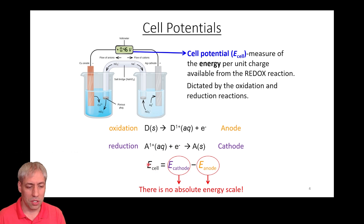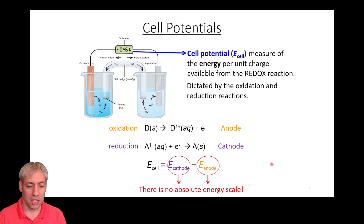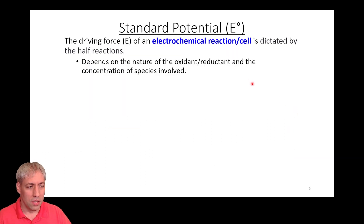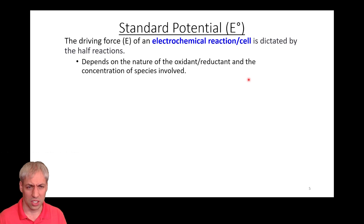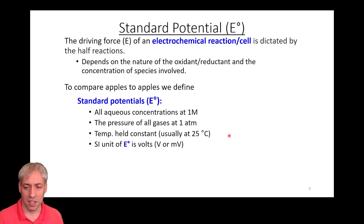We can calculate the cell potential numerically. If we know the energy of the cathode and the energy of the anode, we can figure out E-cell. However, E-cathode and E-anode can't be measured individually, because there's no absolute energy scale — this goes back to fundamental physics. All we can do is rely on relative energy scales, meaning we have to arbitrarily set a zero value and measure potentials relative to that.